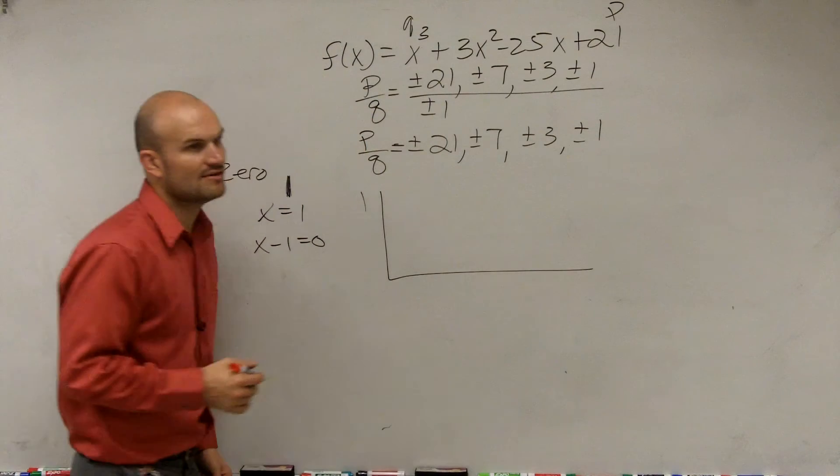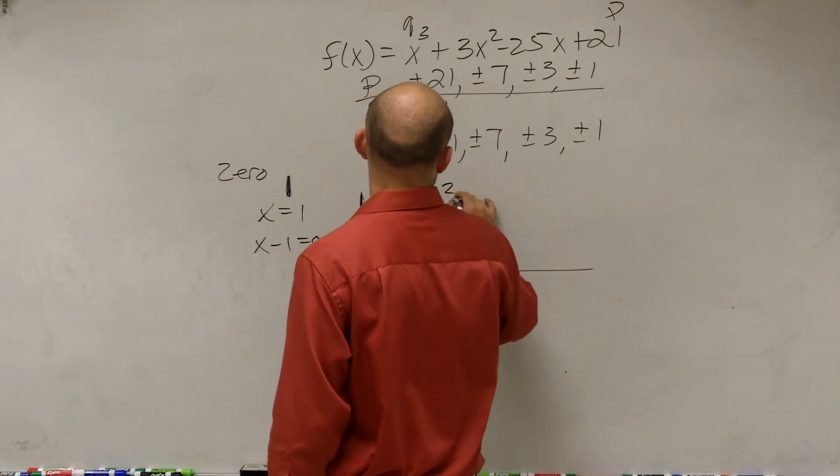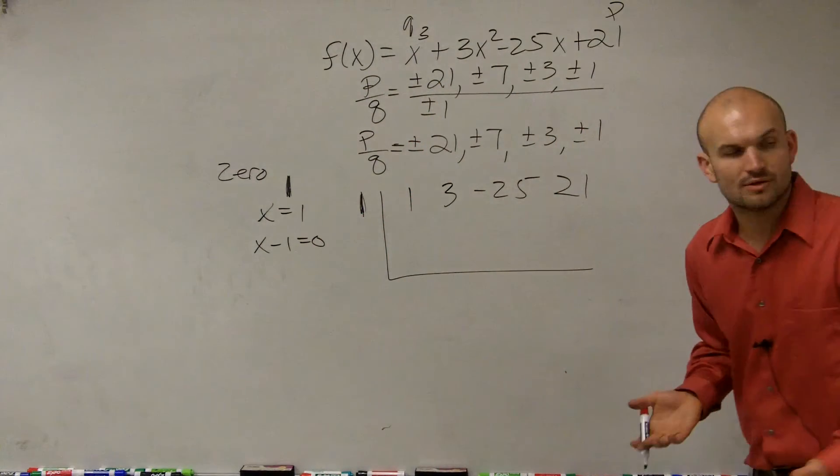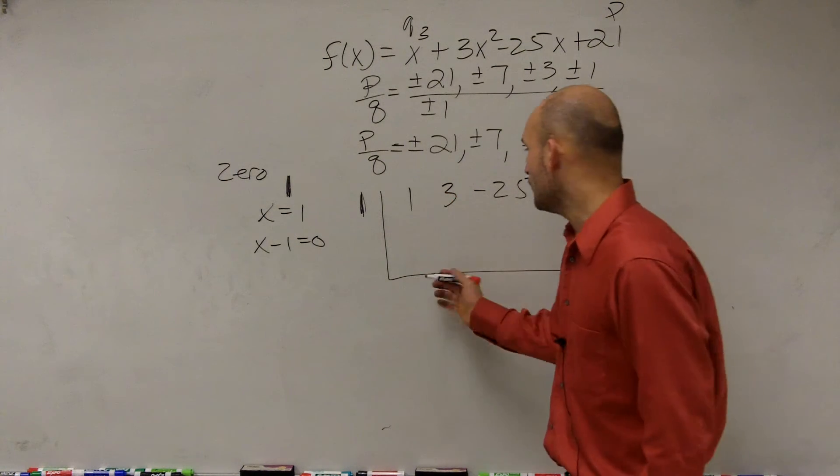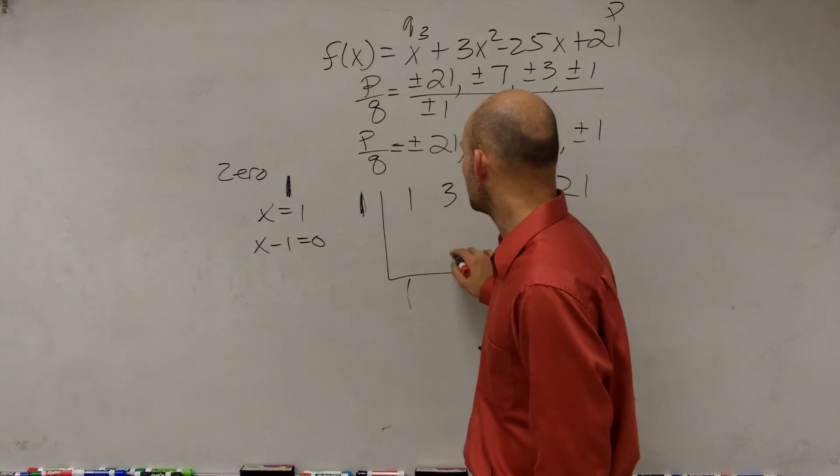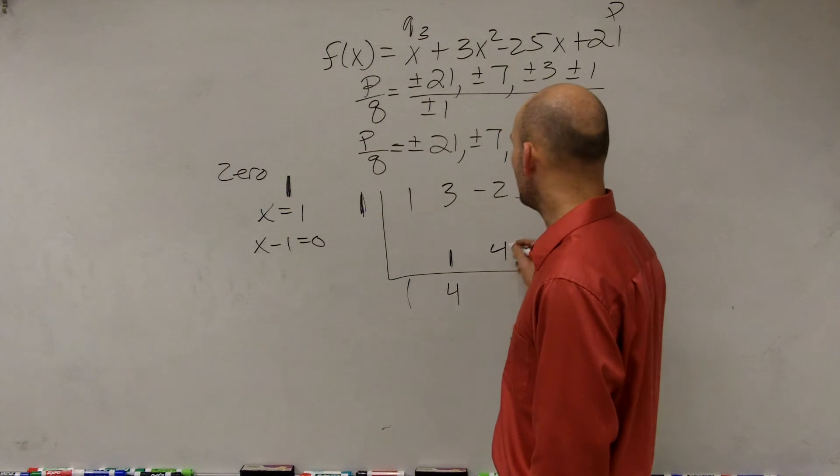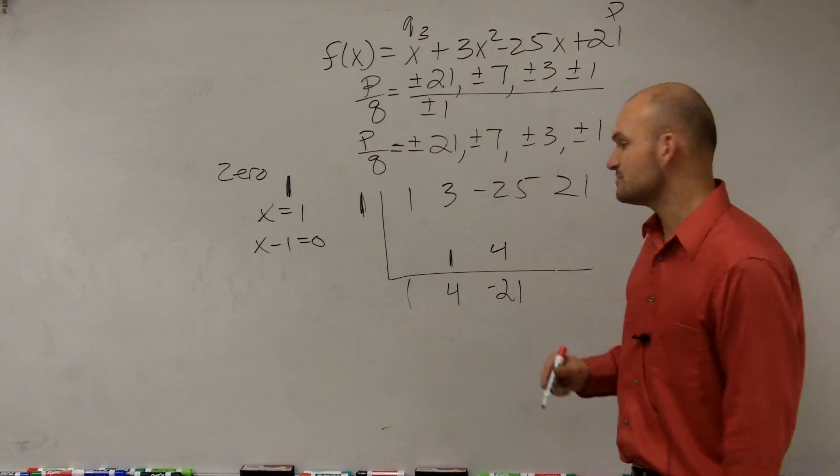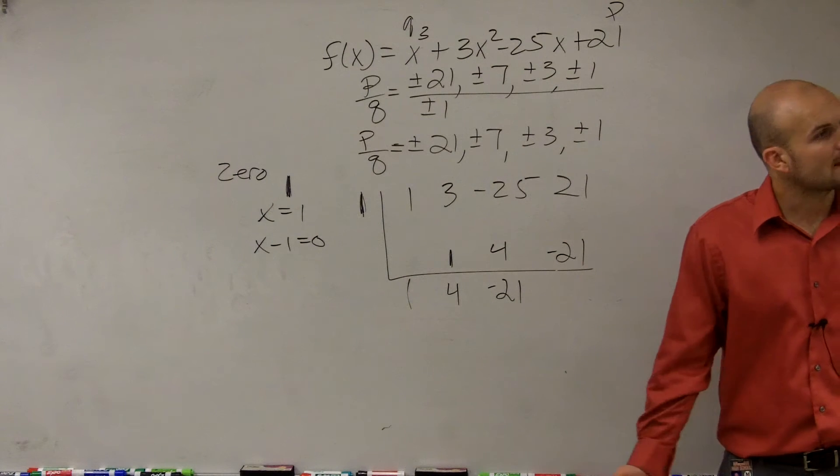So how can I prove this? I'll use synthetic division. So I do one, which is the zero, and one, three, negative 25, 21. So let's use synthetic division and see if this works. So Wendy, first bring down the one. One times one is one. Three plus one is four. Four times one is four. Negative 21 plus four is a negative 21. Negative 21 times one is negative 21. Does that work?